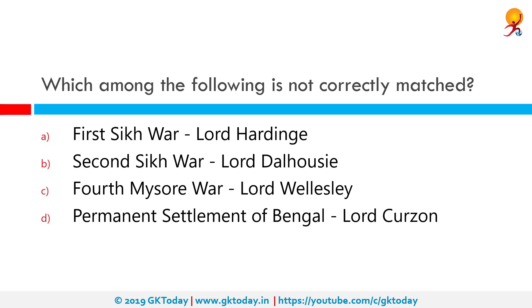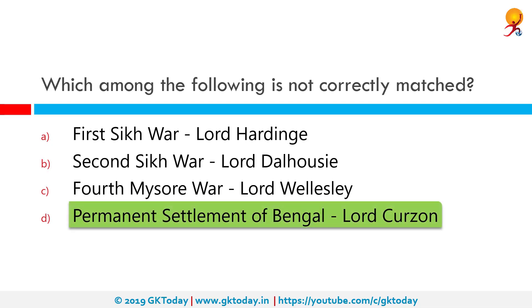Which among the following is not correctly matched? Option D — Permanent Settlement of Bengal attributed to Lord Khazin — is not correctly matched. The Permanent Settlement of Bengal was brought into effect by the East India Company under Governor General Lord Cornwallis in 1793. It was an agreement between the company and Zamindars to fix land revenue, also called the Zamindari system.